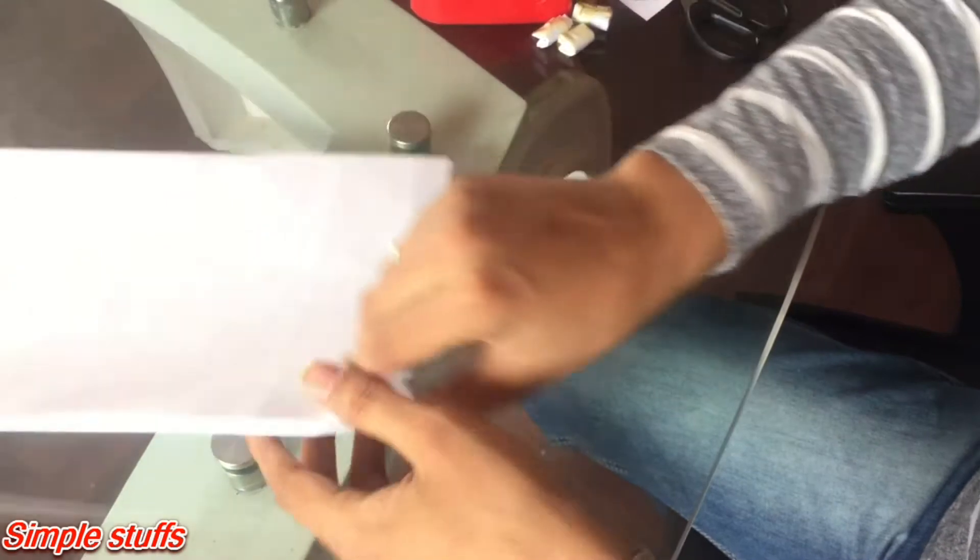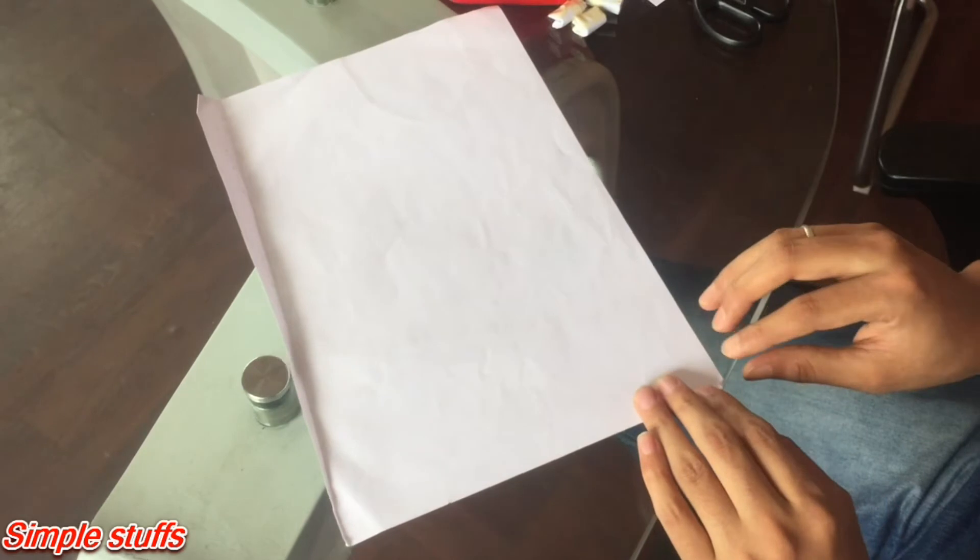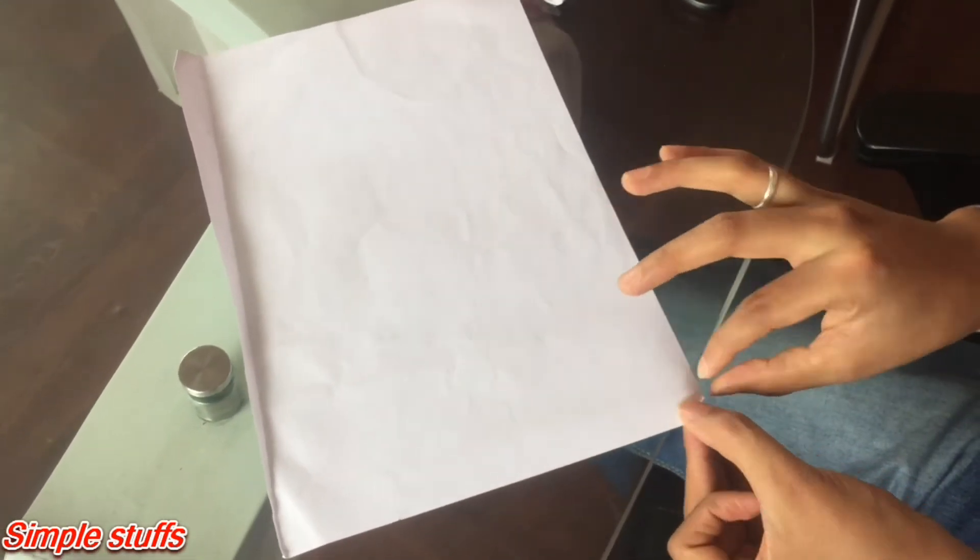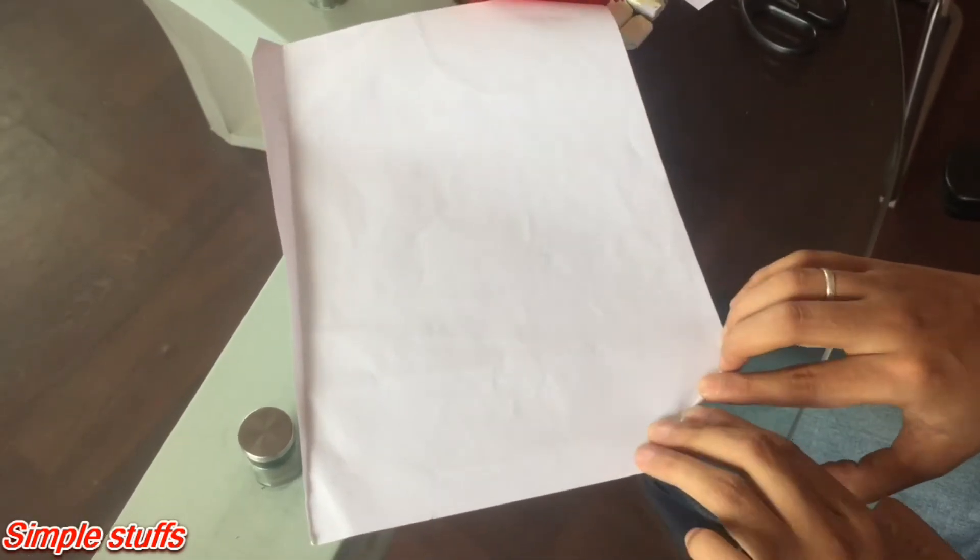Let's take a four size paper and from one side we need to roll it to make a shape like a stick. Fold slowly.